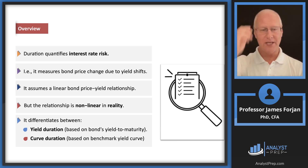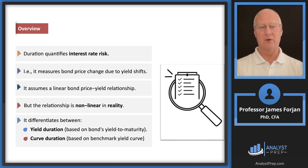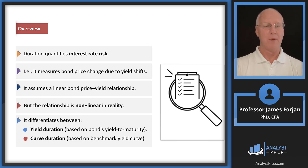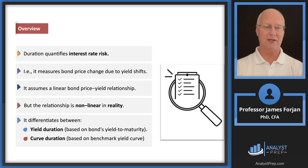We know that when yields go up, bond prices fall, and when yields go down, bond prices increase. This concept of duration allows us to differentiate between yield duration — if the yield on our specific bond changes, what happens to its price? — and curve duration, where the yield on our bond doesn't change but the yield on the benchmark bond does. That distinction between yield and curve duration is important.